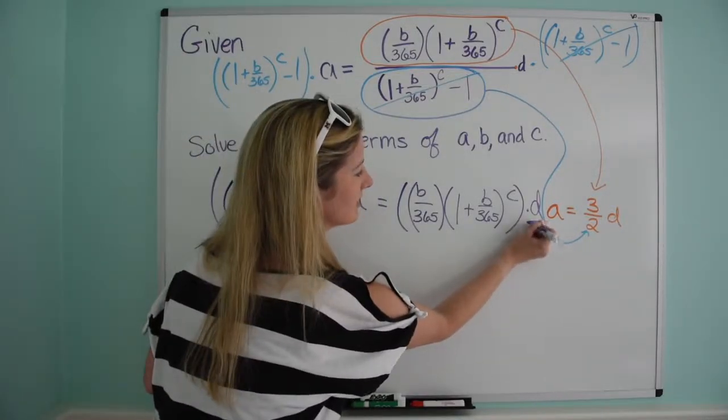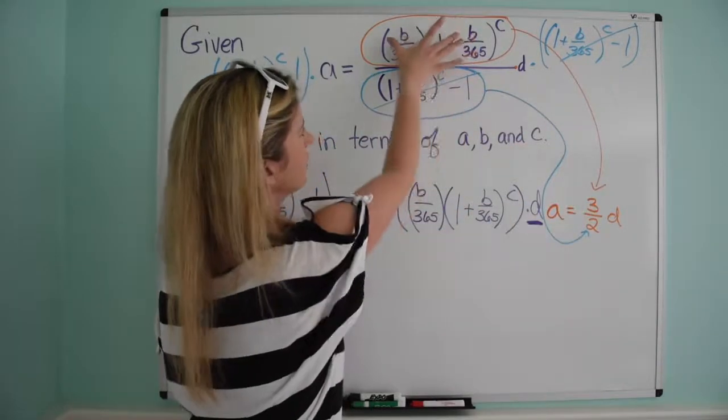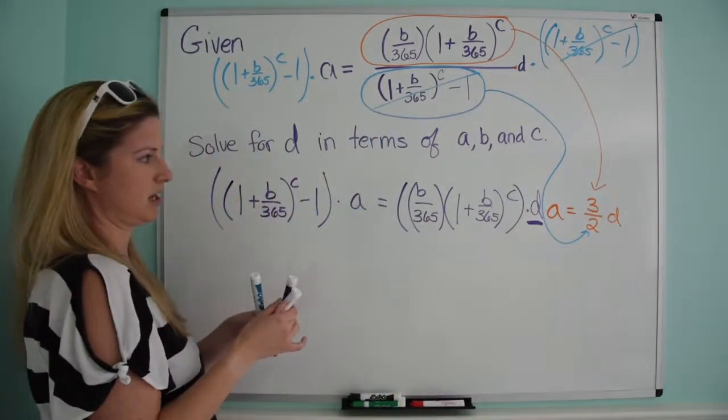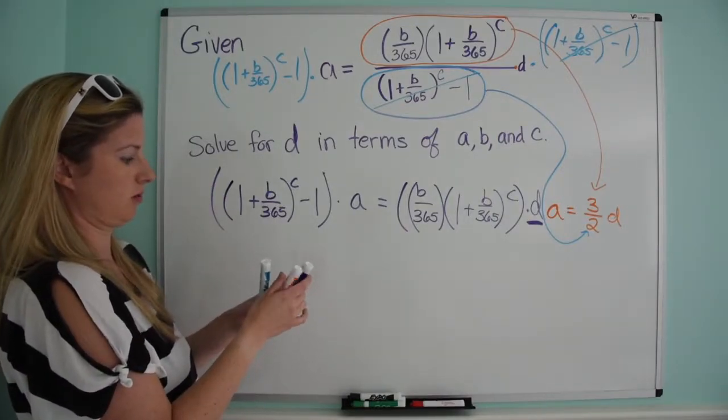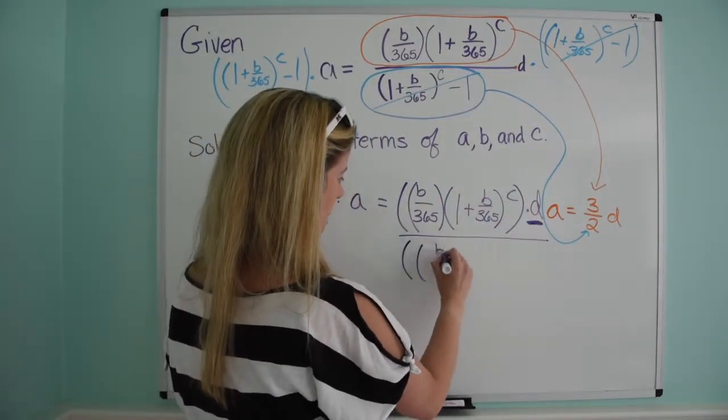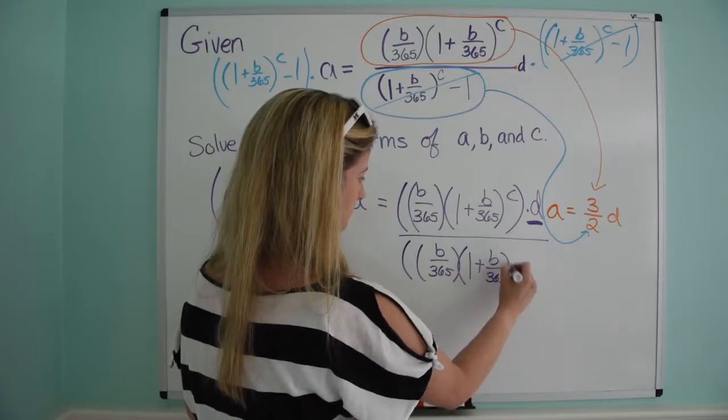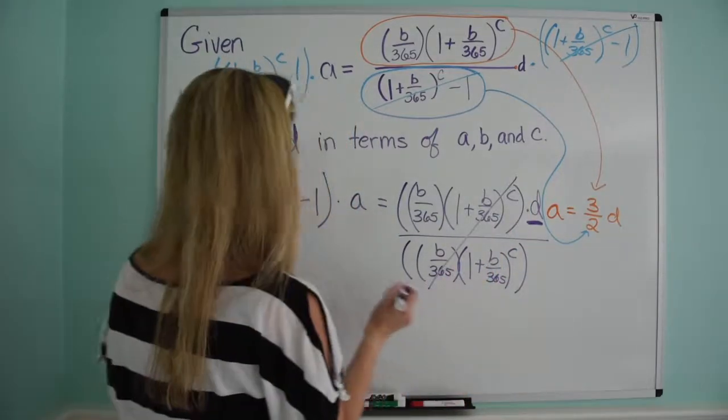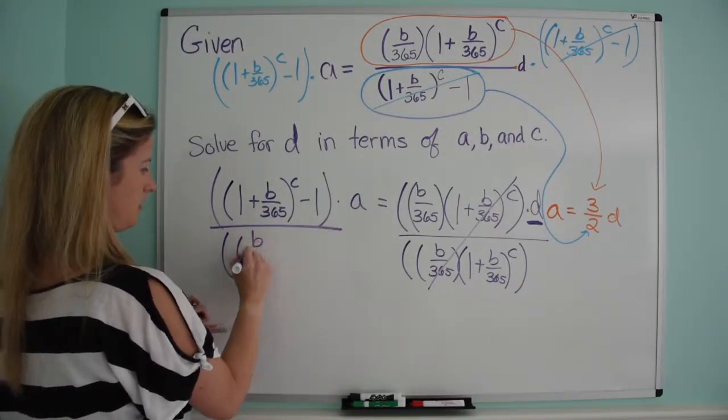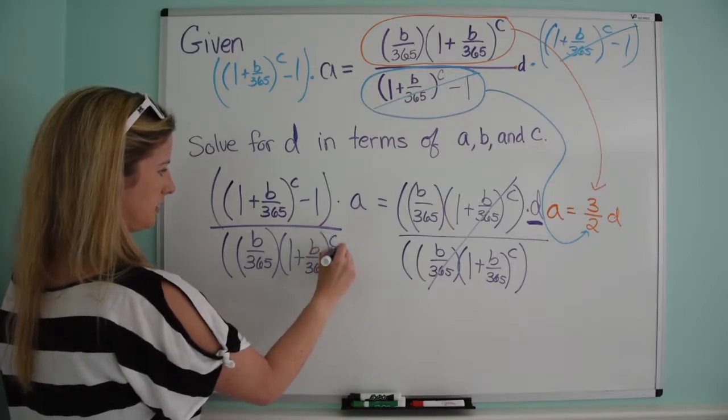So now, remember, I'm trying to isolate this d, so I'm going to take the same approach. The same approach. So here, this numerator is just like this 3 in this equation. And what did we do after we multiplied both sides by 2? We divided both sides by 3. So that's all you're going to do. So we're just going to divide both sides by this. So divide this side by b over 365 times 1 plus b over 365 to the c. And then divide this side by b over 365 times 1 plus b over 365 to the c.